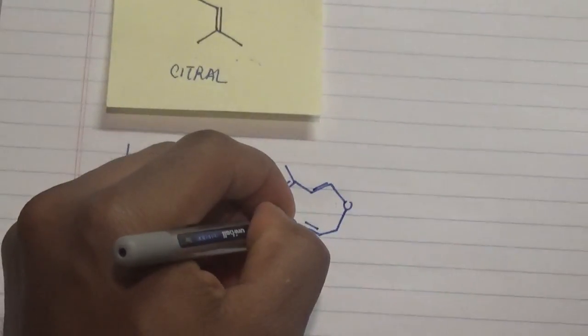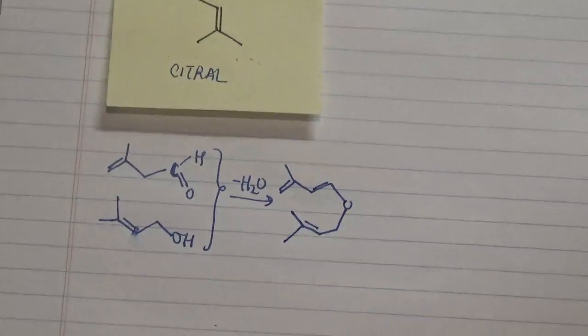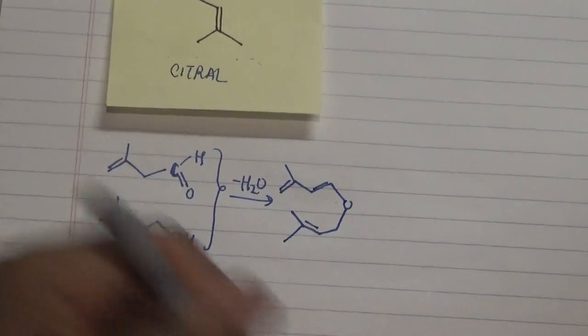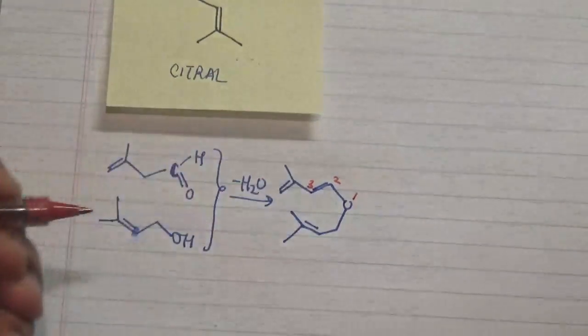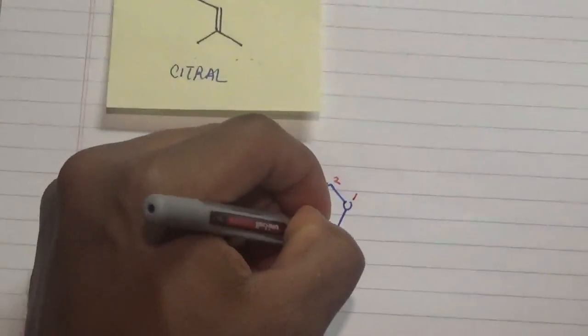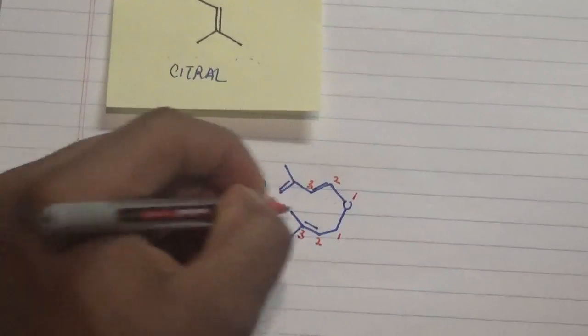Take note that what happens next is that by numbering, we can actually see the sigma bond that will be broken and the sigma bond that will be formed. One, two, three, one, two, three.